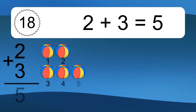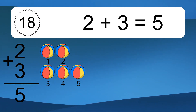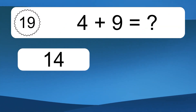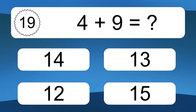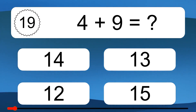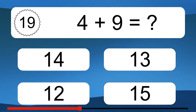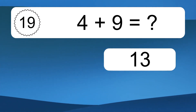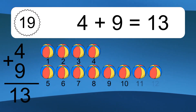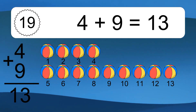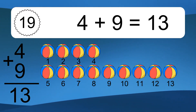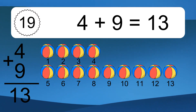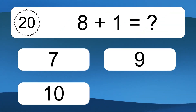2 plus 3 equals 5. Let's count it. 1, 2, 3, 4, 5. 4 plus 9 equals what? 4 plus 9 equals 13. Let's count it. 1, 2, 3, 4, 5, 6, 7, 8, 9, 10, 11, 12, 13. 8 plus 1 equals what?